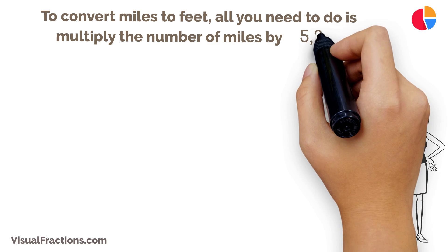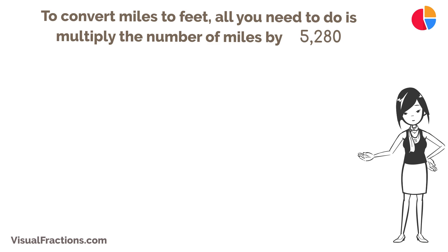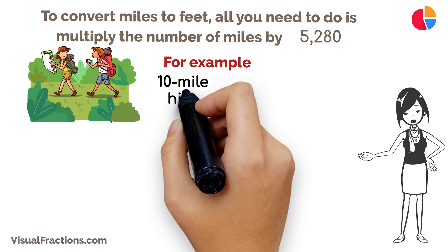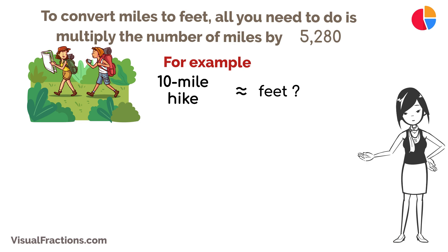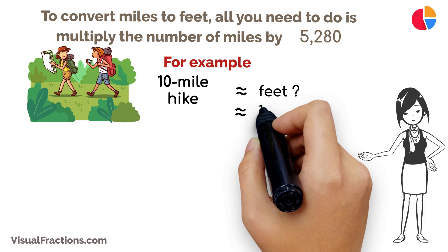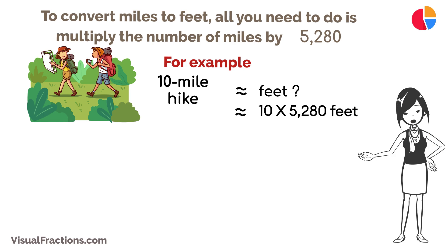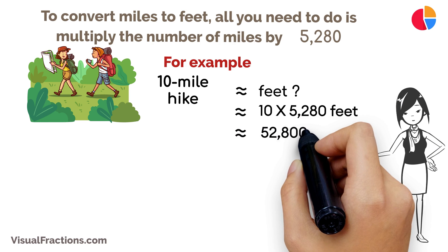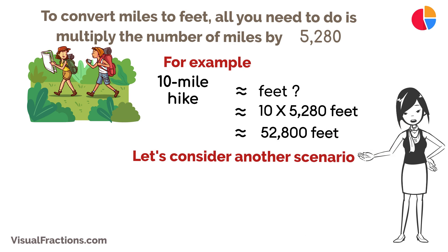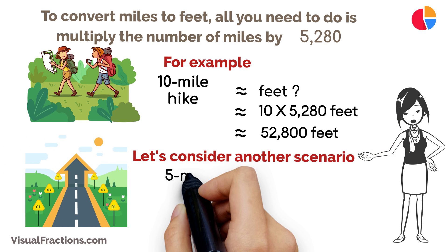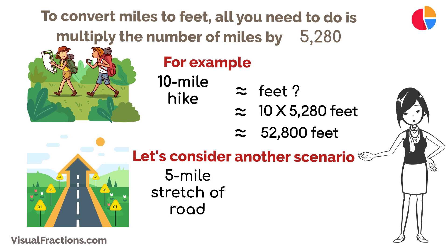To convert miles to feet, all you need to do is multiply the number of miles by 5,280. For example, if you're planning a 10-mile hike and want to know the total distance in feet, simply multiply 10 miles by 5,280. That's a total of 52,800 feet.